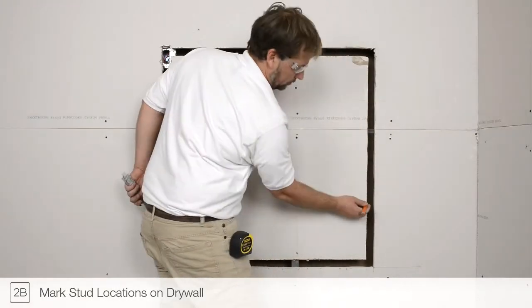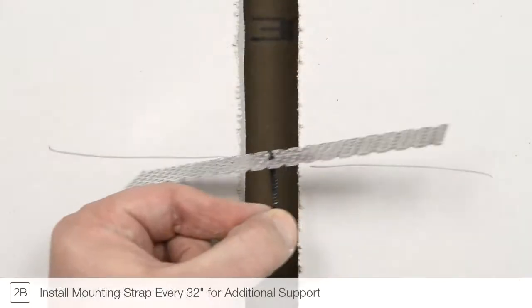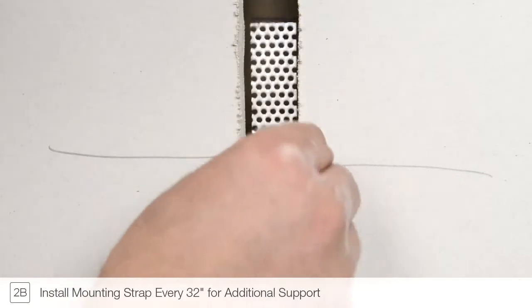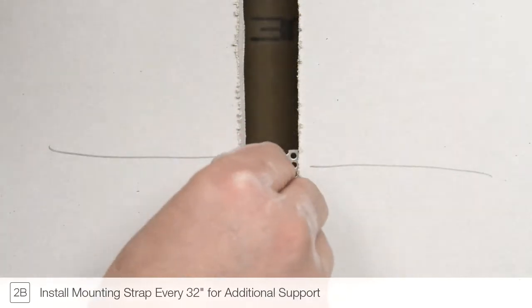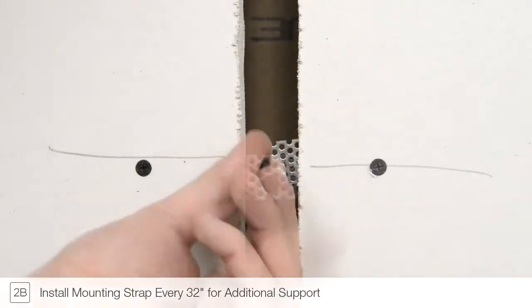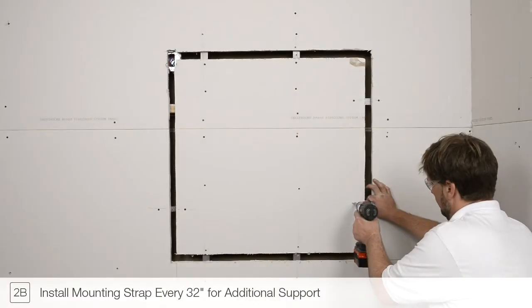Mark the stud and mounting strap locations. Install mounting straps every 32 inches along the installation area for additional support, where there is no stud or joist to support the channel.